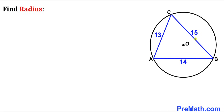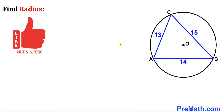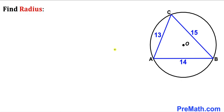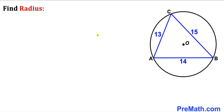Welcome to Pre-Math. In this video we have a triangle ABC fully inscribed in a circle with center O, such that the side lengths of this blue triangle are 13, 14, and 15 units respectively. Our task is to calculate the radius of this circle. Please keep in mind that this figure may not be 100% true to scale. Let's get started.